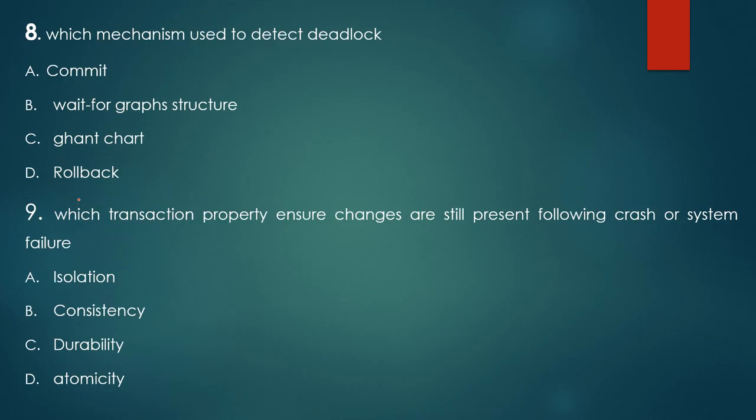Which mechanism is used to detect a deadlock? Options: commit, wait-for graph structure, resource and graph structure. The mechanism detects the lock happening on a resource at a time. The answer is wait-for graph structure.